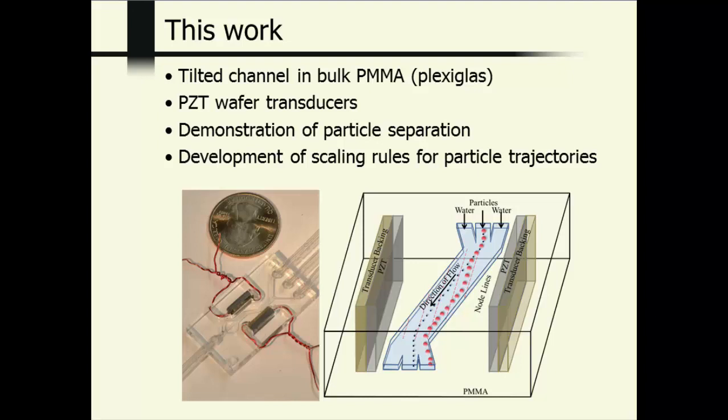We have inlets for a flow of particles and some sheath flow. And at the output side, we divide those flows again, but we bring them back together again for convenience. So this shows a picture of the particles moving through the tilted channel. The idea is that the larger particles are more readily deflected to node lines than the smaller particles and therefore they end up being separated at the end of the channel. So that is the basic concept.